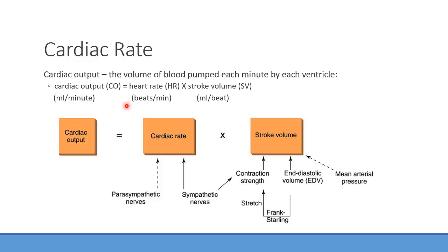The two main determinants of cardiac output are heart rate — normally about 60 to 80 beats per minute, though this can vary by patient — and stroke volume, measured in mL per beat. We'll look at the different things that play a role in determining each of these factors.